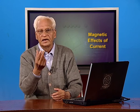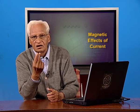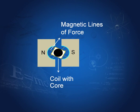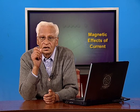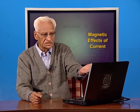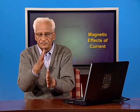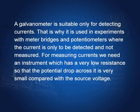The deflection of the coil is a measure of the current going through the coil, and this arrangement is called a moving coil galvanometer. A galvanometer is suitable only for detecting currents — that is why it is used in experiments with meter bridges and potentiometers, where the current is only to be detected and not measured. In those experiments, we just find the point where there is no current.